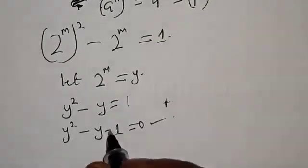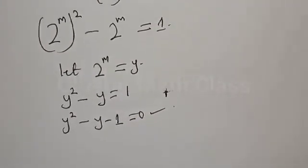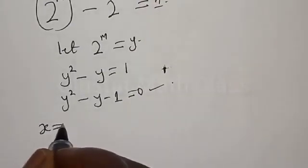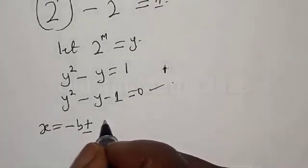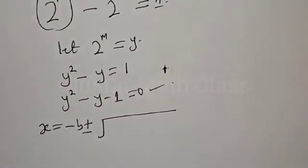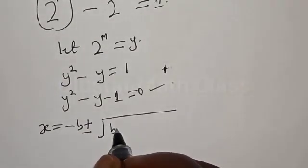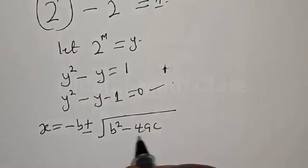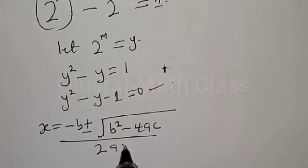Then we have y squared minus y minus 1 equal to 0. This is a quadratic equation. We can solve this by using the quadratic general formula: y is equal to minus b plus or minus square root of b squared minus 4ac, over 2a.